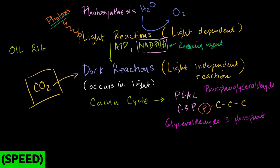Let's focus first on the light-dependent reactions — the part that actually uses photons from the sun, or maybe even photons from the heat lamp that you might have in your greenhouse, and uses those photons in conjunction with water to produce ATP and reduce NADP+ to NADPH.